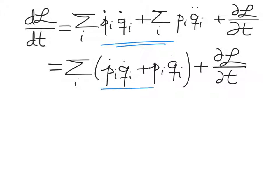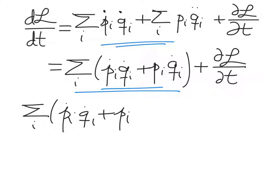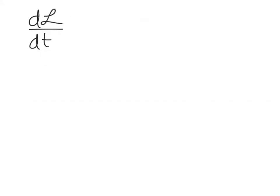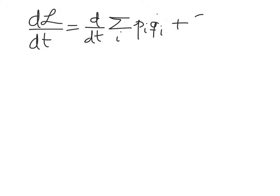It seems clear that this expression can be rewritten as the time derivative of the sum over i of pi times qi dot. You can verify that applying this time derivative across the sum gives exactly the same expression. So the total time derivative of the Lagrangian equals the total time derivative of the sum over all coordinates i of pi qi dot, plus any explicit time dependence.